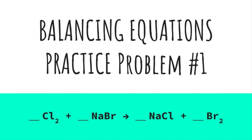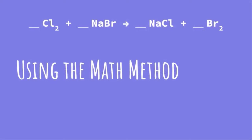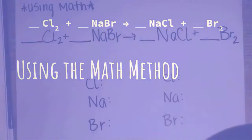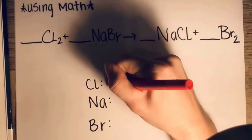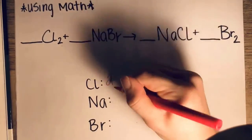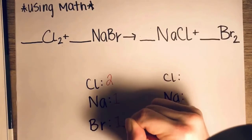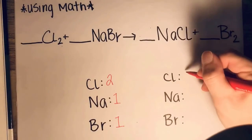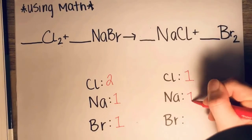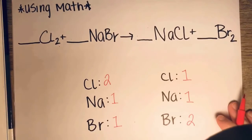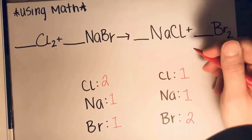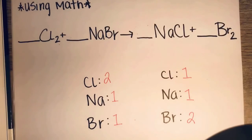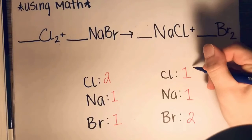So here's our first equation. Using the math method, we're going to show how chlorine gas reacts with sodium bromide to form sodium chloride and bromine gas. So using math, the first thing I want to do is count my atoms. So I have two chlorines, one sodium, and one bromine on my reactant side. I have one chlorine, one sodium, and two bromines on my product side. Notice that I have my elements lined up so that they're in the same row as each other from reactants to products. I'm going to start by balancing chlorine, Cl.